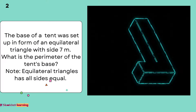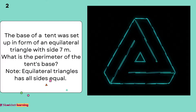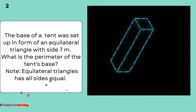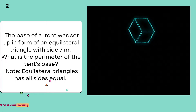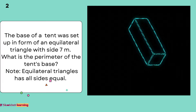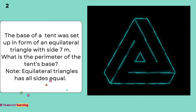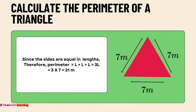Number 2. The base of a tent was set up in the form of an equilateral triangle with sides of 7 meters. What is the perimeter of the tent's base? Note: an equilateral triangle has all sides equal. Since all sides are equal in length, the perimeter equals L plus L plus L, which is 3L, giving us 21 meters.